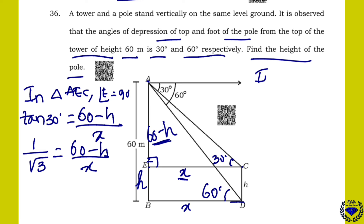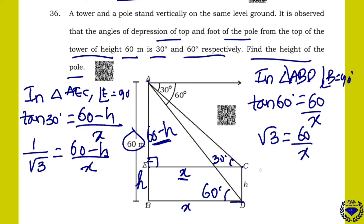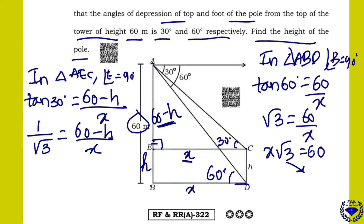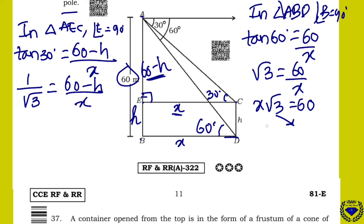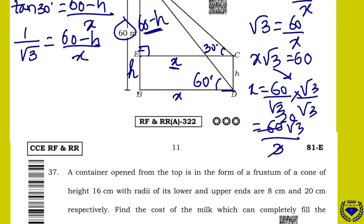In the bigger triangle ABD, angle B is 90 degrees. Tan 60 = 60 over X. Tan 60 = root 3, so root 3 = 60 over X, giving X root 3 = 60. Rationalizing: X = 60 over root 3 = 60 root 3 over 3 = 20 root 3 meters.